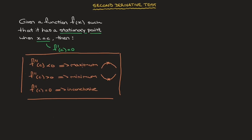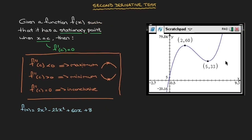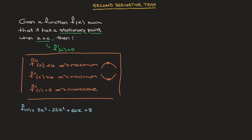Here's an example. Let's say we're given f(x) = 2x³ − 21x² + 60x + 8, and we need to find and classify any stationary points along this curve. With a calculator we could quickly find them — the curve has a local maximum at (2, 60) and a local minimum at (5, 33). But without a calculator, we use the second derivative test.